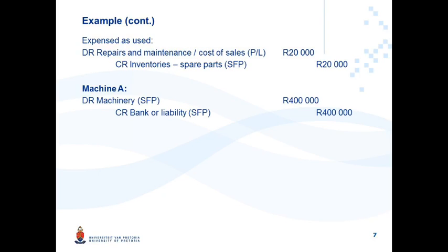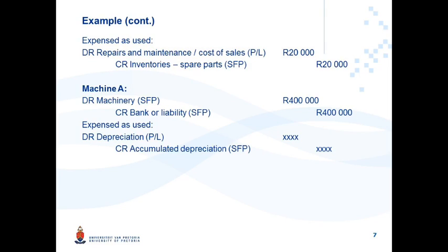Machine A is PPE. The debit — the cost — goes to machinery in the Statement of Financial Position at 400,000 Rand. Any Property Plant and Equipment is expensed as used through your depreciation expense through profit or loss. In this example, not enough information was provided to calculate this amount, but it's always good to remember that any PPE item carries a depreciation charge annually.